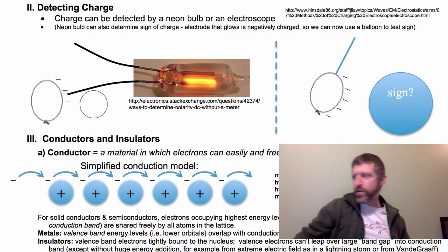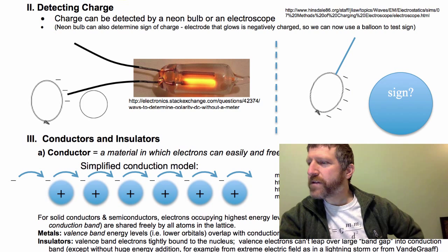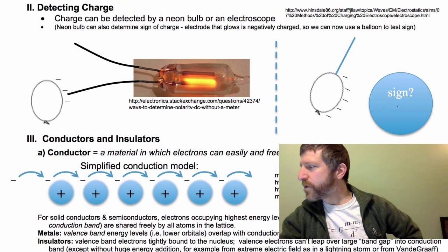For example, you can determine what is the sign of the foam pad. It repels the balloon. It must also be negative. So we do know that this object right here is negatively charged.